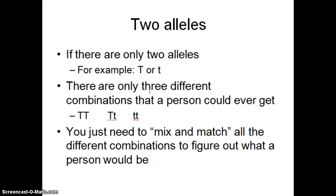So basically when you're talking about multiple alleles, whether you have two, three, four, or whatever the number is, you basically just need to mix and match to get all the different combinations that you can get, that you can find out how many combinations a person could have. So if you have two alleles, the only options that you can get are these three.